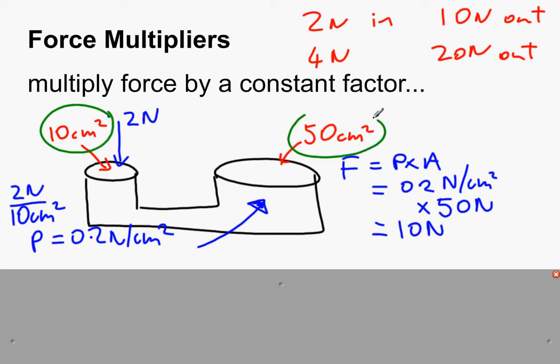And you'll notice that the area of the input piston and the area of the output piston are in the ratio of 1 to 5. So the ratio is 10 centimeters squared to 50 centimeters squared, which simplifies to 1 to 5.